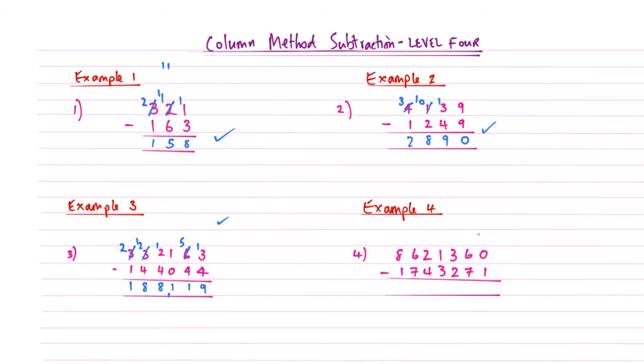So example number 4 then. Last one. So 0 take away 1. That doesn't work. So we need to reduce this 6 to a 5. And then write a 1 next to there. So 10 subtract 1. That becomes a 9. 5 subtract 7. We can't do this. We're going to have to borrow again. So now this becomes a 2. And then we now read this as a 15. 15 subtract 7. Well that's going to give me an answer of 8. Hundreds column. 2 subtract 2 becomes a 0.